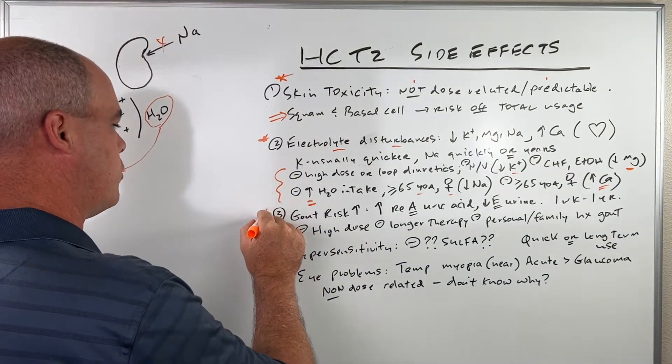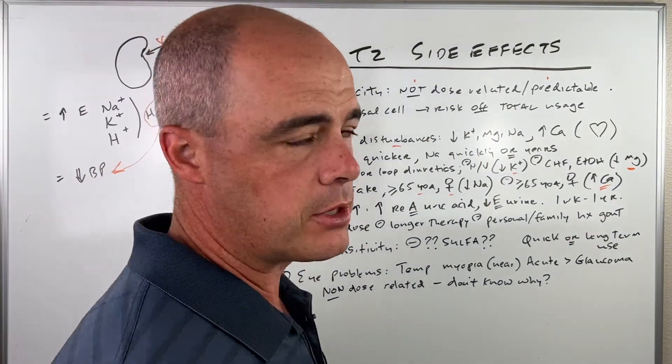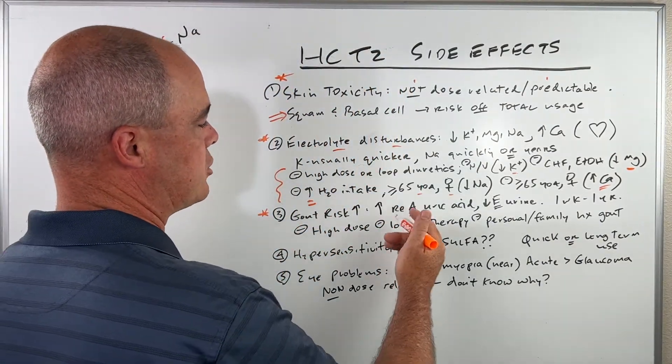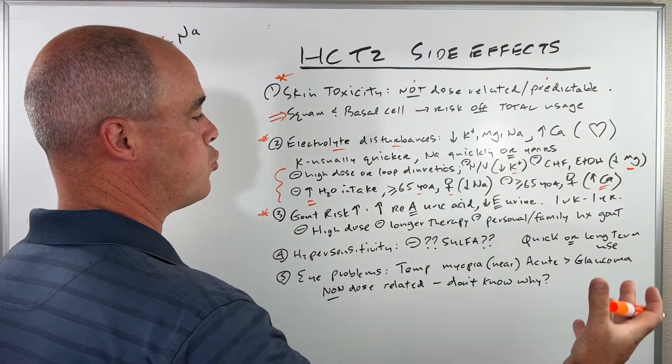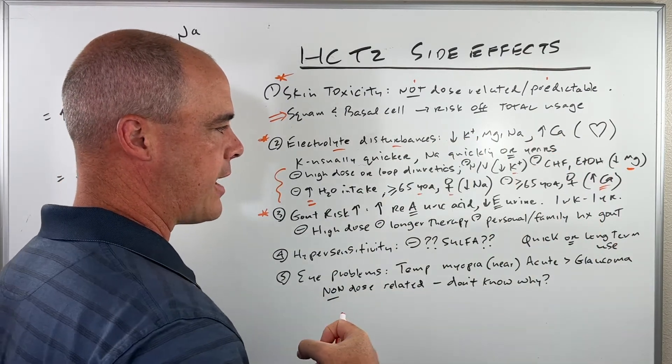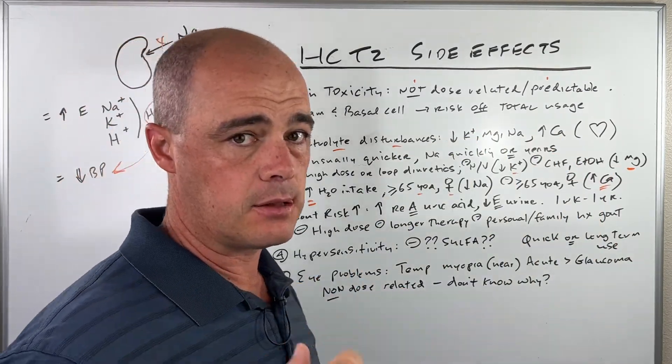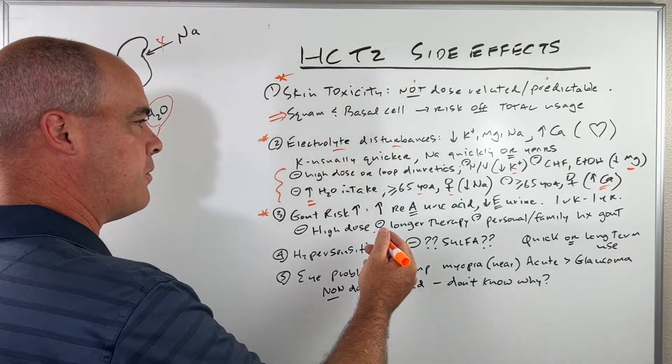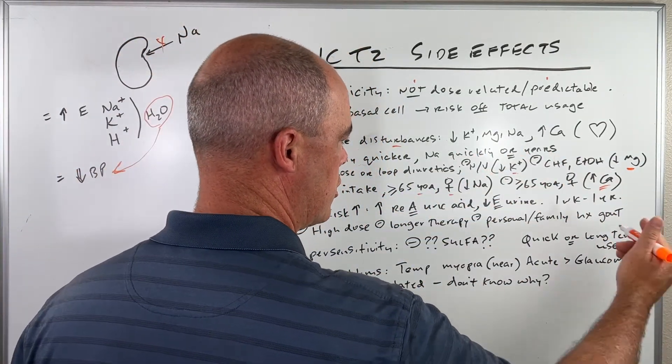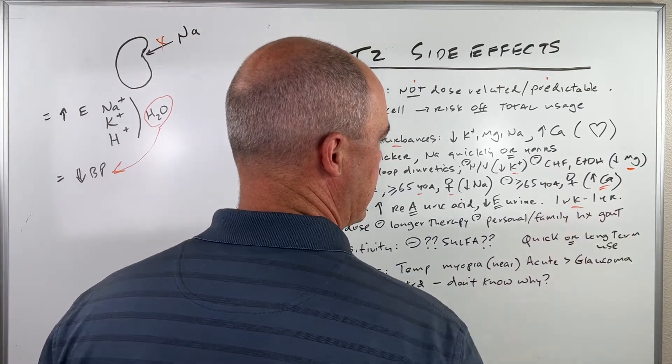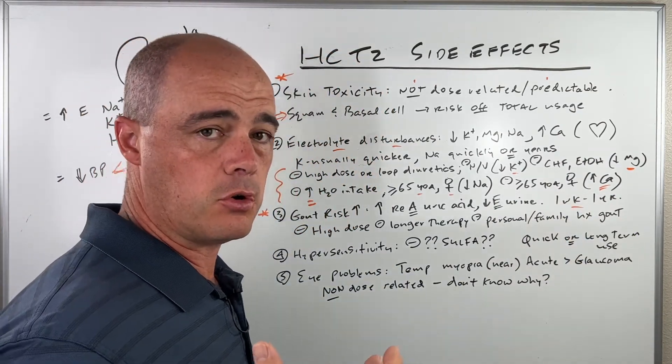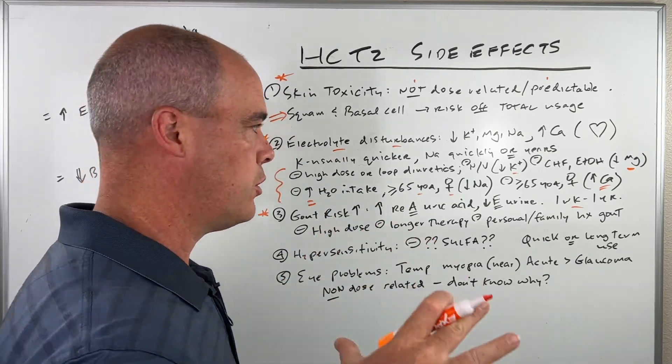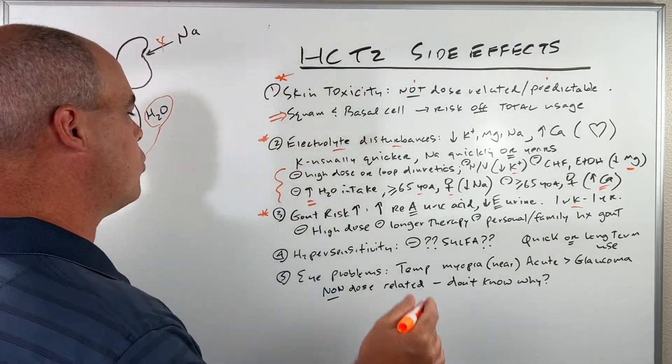This is an interesting one. Gout risk. Your gout risk can go up and what's going on is when you take HCTZ, you see an increased reabsorption by your body of uric acid and you're eliminating less in your urine. So you can have a buildup of uric acid which leads to gout. Again, it can happen after a week of use. It can happen after a year of use. Not really a timeline on this one.